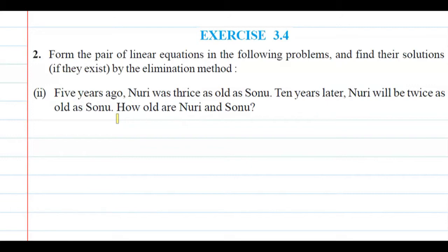Form the pair of linear equations in the following problem and find their solution if they exist by the elimination method. The problem is: 5 years ago, Nuri was thrice as old as Sonu. 10 years later, Nuri will be twice as old as Sonu. How old are Nuri and Sonu?